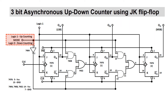Logic 1 on the mode selection switch will indicate up-counting, whereas logic 0 on the mode selection switch will indicate down-counting. The clock signal for the next JK flip-flop will be dependent on the mode selection switch and outputs Q and Q-bar of the previous JK flip-flop. The circuit for clock signal generation for preceding flip-flops is as shown here.